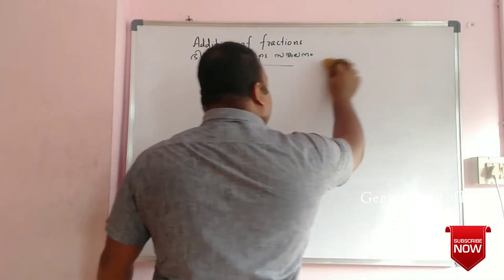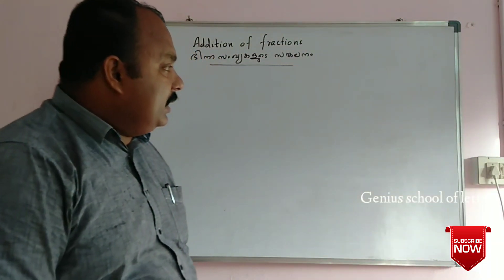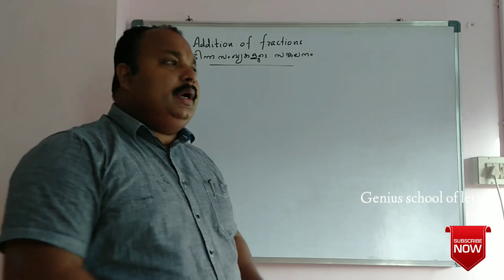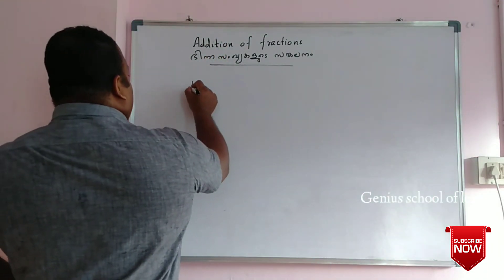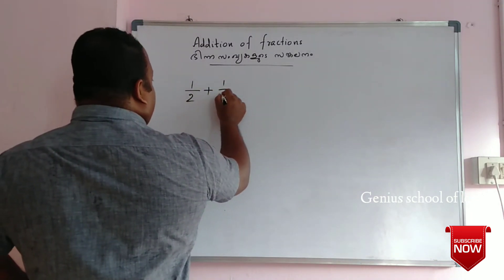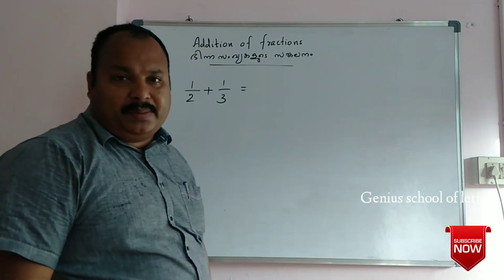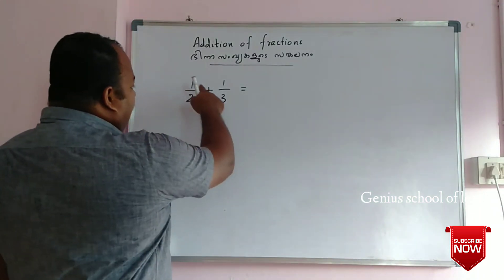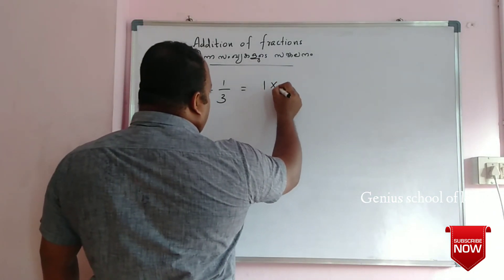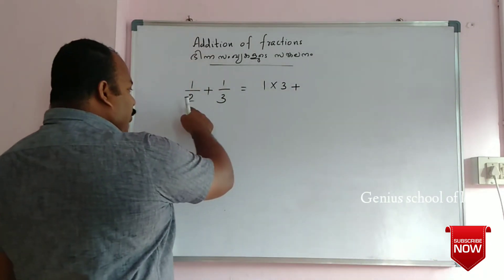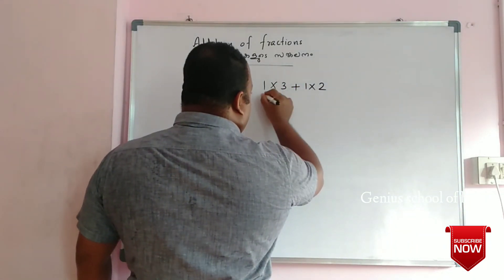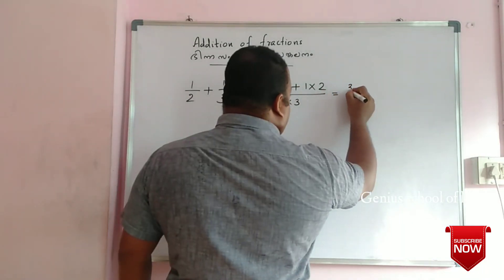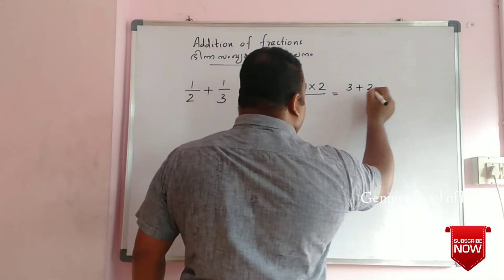So why are we going to take a look at our question? If we are going to take a look at the denominator, the denominator is 1 by 2 plus 1 by 3. The denominator is 1 into 3 plus 1 into 2, by 2 into 3, which is equal to 1 into 3 plus 1 into 2 by 2 into 3.